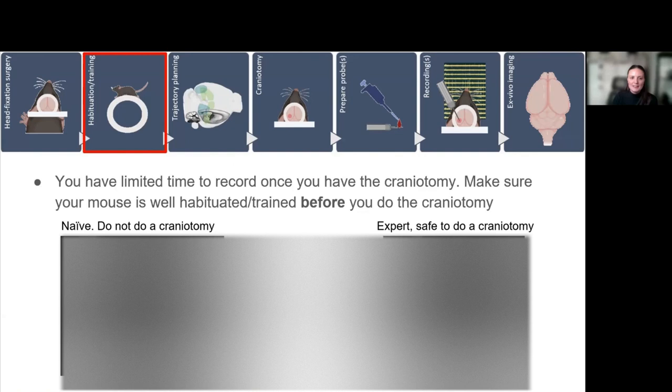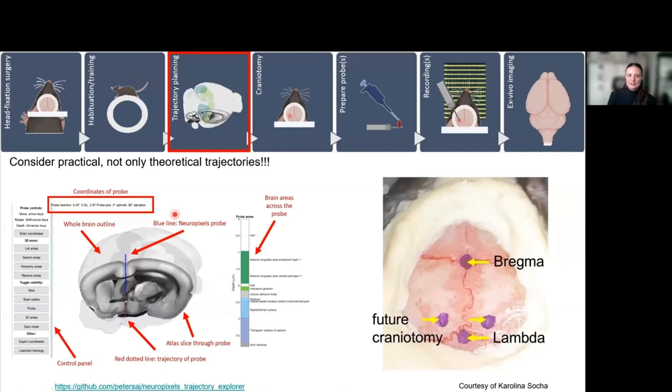Something else to keep in mind is where you want to position once you have a craniotomy. It's very important that the mouse is well habituated to the setup or even trained before you do the craniotomy. If the mouse in my case needs to run, if it's not running a lot, don't do a craniotomy because you will not get the data you need. We've had a whole lecture on trajectory planning, so I'm not going into that too much. Just wanted to mention that you really have to consider practical as much as theoretical trajectories. You wouldn't be the first person to come up with a very cool trajectory and find out on the day that it actually doesn't fit because you have three screens around your mouse. Make sure you practice your trajectories before you do a craniotomy. We like to mark during the head-fix surgery where Bregma and Lambda are and also where our future craniotomies are going to be, because once the clear skull cap is on, sometimes it gets a bit less visible.